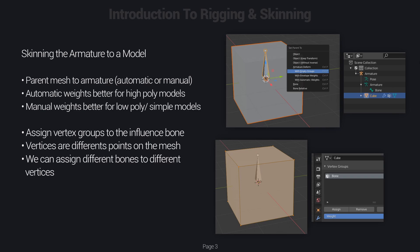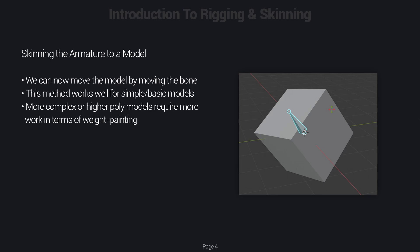For example, if we want the upper arm to be attached to the upper arm bone, we're only going to select those vertices of the upper arm mesh and connect those to the bone. Vertices are the small points on the corners of the mesh. You can attach specific vertices to specific bones, which is very useful if you want different bones to have influence over different parts of the mesh. After going through the skinning process, we can start moving the mesh by moving the bone. With simple or low poly models you don't really need to polish it much — you just assign the vertex groups and it just works.